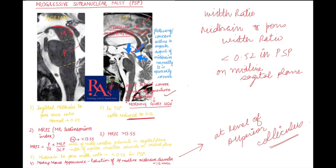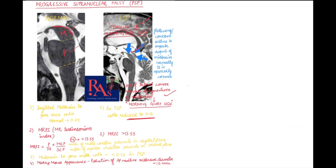Progressive Supranuclear Palsy should be differentiated from other neurodegenerative diseases. Parkinson's disease usually spares the midbrain and the superior cerebellar peduncles. Multiple System Atrophy predominantly affects the middle cerebellar peduncles and the pons, producing the hot cross bun sign.